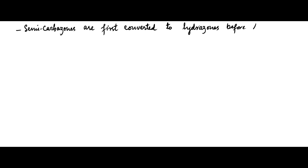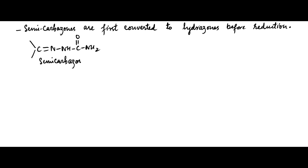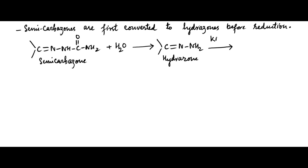Semicarbazones are first converted to hydrazones before subjecting to Wolf-Kishner reduction. For example, a semicarbazone is first hydrolyzed into a hydrazone, which is then subjected to heating with KOH base in ethylene glycol solvent to change the carbonyl into a methylene group with loss of N2 gas.